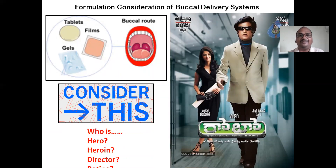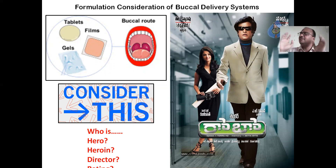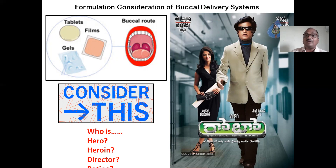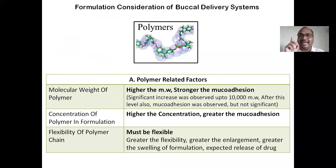When preparing mucoadhesive formulations, you have to consider some important points — just like before watching a movie you check who the hero is, the director, and the rating, you cannot simply proceed without consideration. There are four factors: A, B, C, D. Factor A is polymer-related factors.